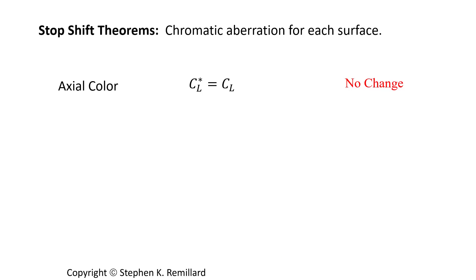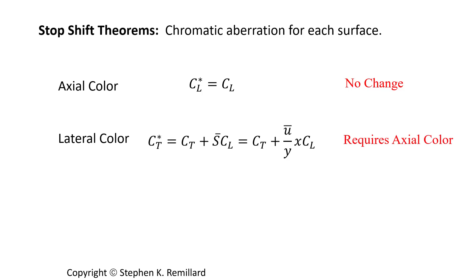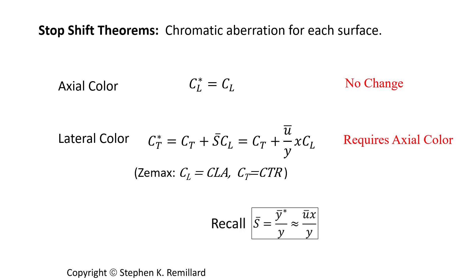Axial color does not change when you move the stop. But lateral color does — lateral color's coefficient changes linearly with the stop position, but you have to have axial color present for that to happen. Make a note of that because it will be tested in the spreadsheet.